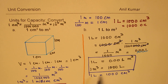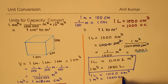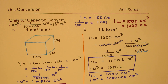And therefore you can write that one meter cube is one million centimeter cube. So that gives you all three formulas relating capacity, especially when talking about fluids.